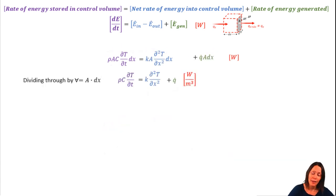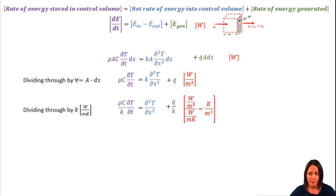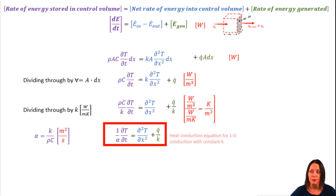Now we divide through by the volume to get rid of a few terms and simplify the equation. And then divide through by k, which allows us to get things in terms of thermal diffusivity, which you recall from the previous video. And you have the heat conduction for 1D conduction with constant k, constant thermal properties. We can also extend this out to three dimensions as well, if we need.